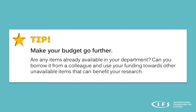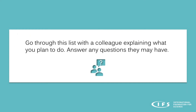When writing this list, keep in mind that you can make your budget go further by considering if any items are already available in your university or institute. Can you borrow certain items from a colleague? This way you can save money and use your funding towards other items that can benefit your research. When you're done with your list, go through it with a colleague, explaining what you plan to do, and be sure to answer any questions they might have.